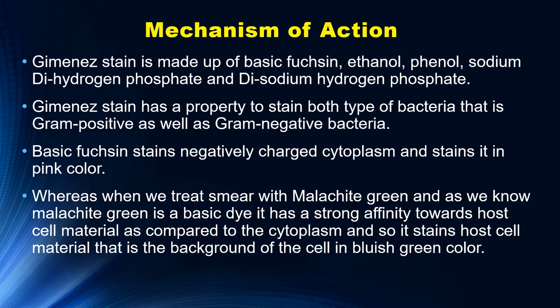Whereas when we treat the smear with malachite green — and as we know malachite green is a basic dye — it has a strong affinity towards host cell material as compared to the cytoplasm. So this stains the host cell material, that is the background of the cell, in bluish green color. So first, Gimenez stain stains the negatively charged cytoplasm in pink color, and then malachite green stains the background of the cell in bluish green.